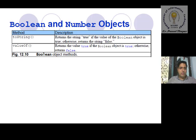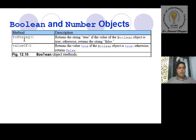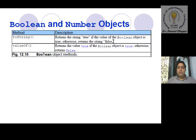Let's explain Boolean and Number objects in detail. There are two main methods for both Boolean and Number objects: first is toString and second is valueOf. toString returns the string 'true' if the value of the Boolean object is true, otherwise it returns the string 'false'.